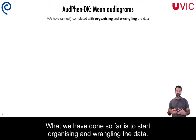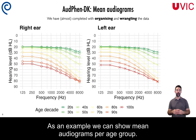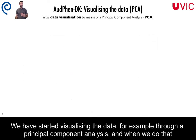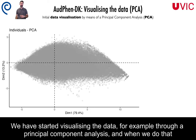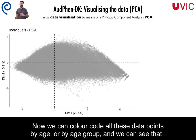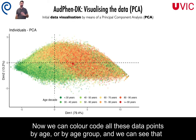What we've done so far is to start organizing and running the data. As an example, we can show mean audiograms per age group, and we can see the known correlation between age and PTA. We have started visualizing the data through a principal component analysis, and when we do that, we can see that the two main components account for about 90% of the variance of the data.